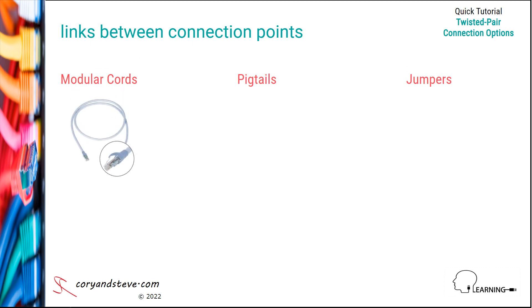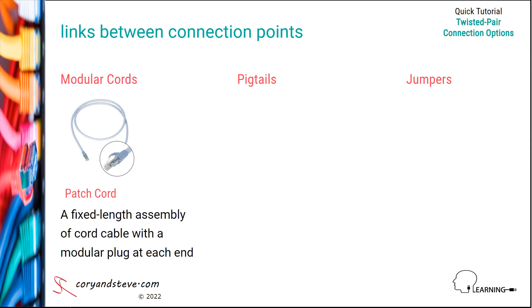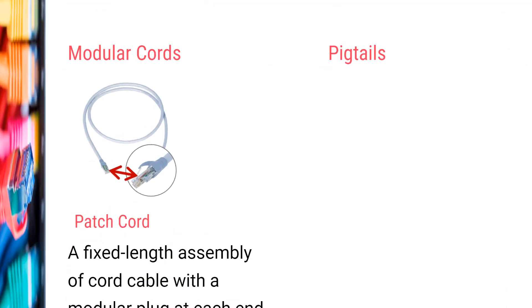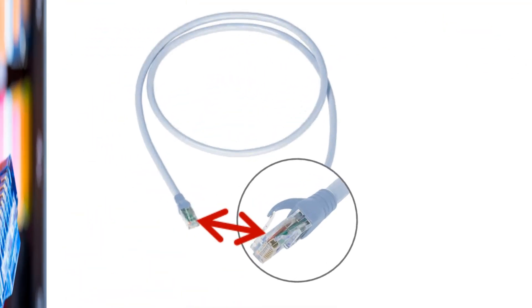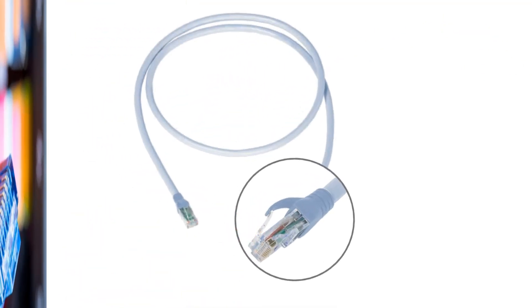A modular cord, commonly referred to as a patch cord, is a fixed length assembly consisting of cord cable that has modular or RJ45 plugs factory mounted at both ends.